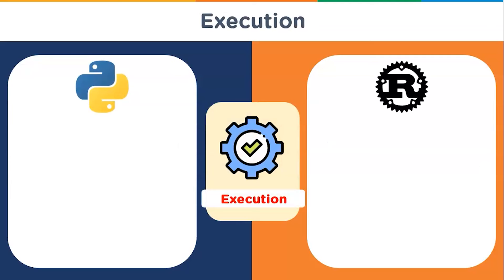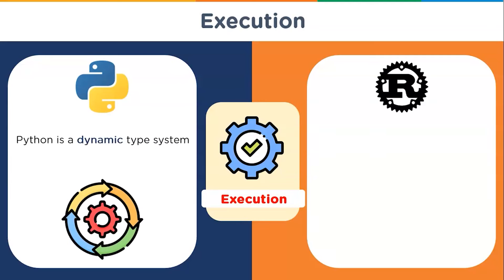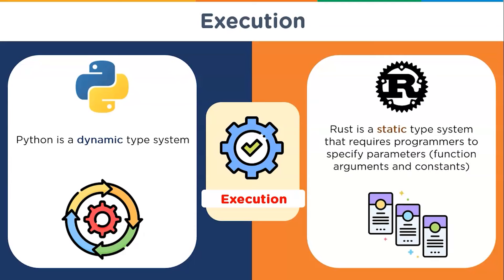Comparing the two on grounds of execution: Python is a dynamic type system that allows developers to develop software easily. In contrast, Rust is a static type system that makes programmers specify parameters from function arguments to constants, but it acts dynamically inside the function body. Moreover, Rust comes with the feature to handle exceptions at compile time, which allows programmers to run programs smoothly at the user end.